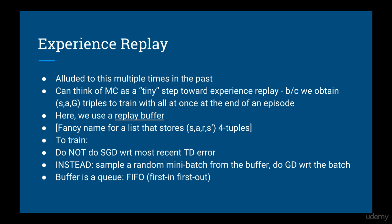The next trick we use is called Experience Replay. I've alluded to this multiple times in the past. You can think of Monte Carlo methods as a tiny step towards Experience Replay, because when we use Monte Carlo, we obtain a set of state-action return triples that we then use to train the function approximator all at the same time once the episode is over. With Experience Replay, we take this a step further. We introduce what is called a Replay Buffer. The size of the buffer is chosen by the programmer and is considered to be a hyperparameter. Inside the Replay Buffer, we store four-tuples of state, action, reward, and next state. To train the Deep Q-Network, we sample a random mini-batch from the Replay Buffer and use that as training data. The buffer basically acts as a queue. In computer science terms, that means first in, first out. So the buffer always contains the most recent four-tuples.